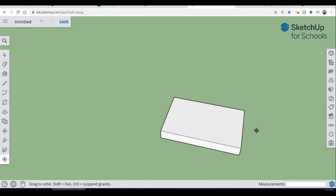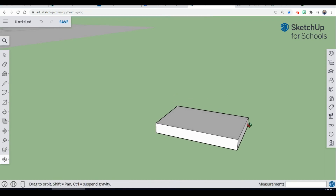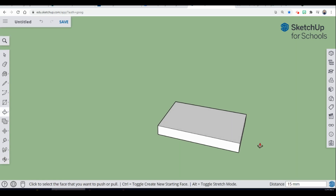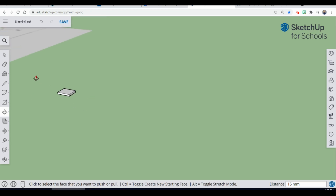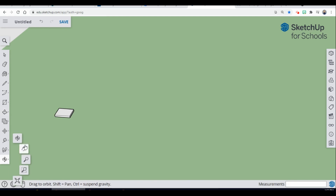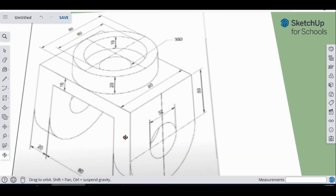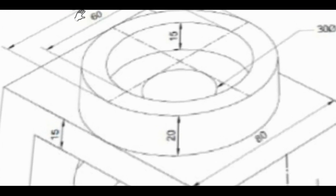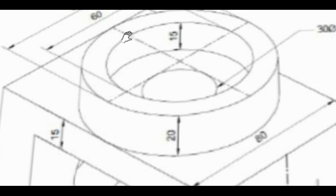We're going to rotate our piece and the next thing we're going to do is draw our circles. The sizes are: we need two circles — the outer circle is going to have a diameter of 80, so the radius is going to be 40, and then the inner circle is going to be a radius of 30 because the diameter is 60. So we're going to do two circles with radii of 40 and 30.